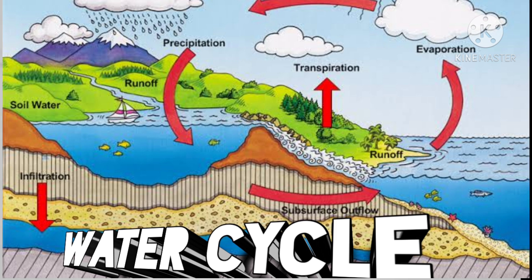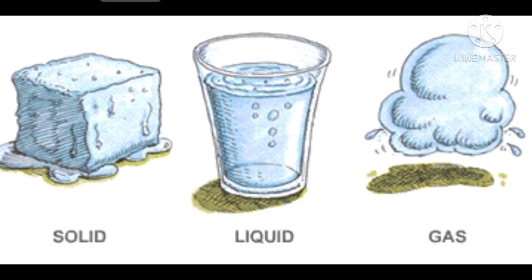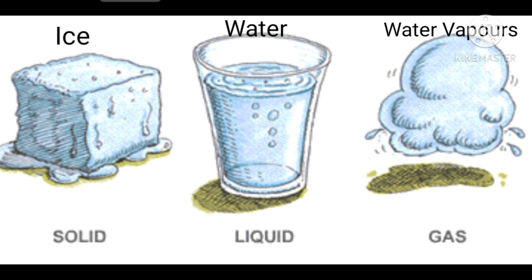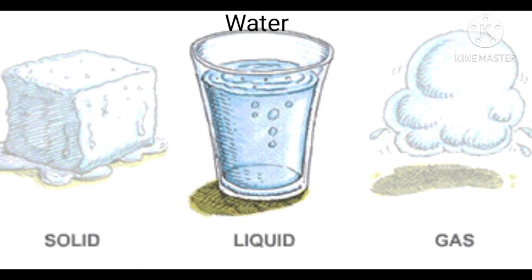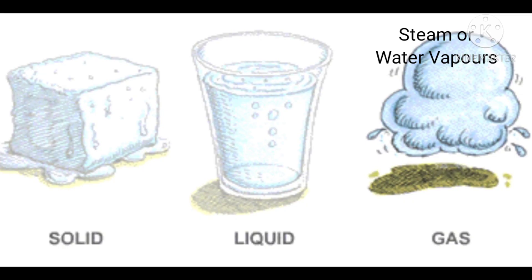Dear children, water is the only substance on earth that naturally occurs in three forms: ice, water, and water vapors. Ice in the solid state, water in the liquid state, and steam or water vapors as the gaseous state.